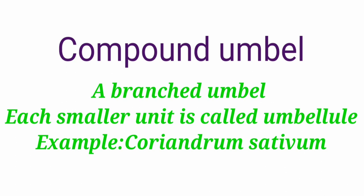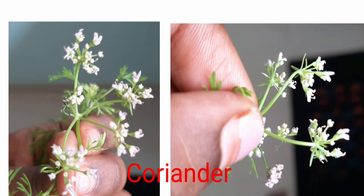Next one is the compound umbel, which is also called a branched umbel. Here the umbels are joined together on a common rachis, that is a primary rachis, and each smaller unit of the umbel is called an umbelet. The example for this is Coriandrum sativum, that is coriander. In this picture you could find the lower side and upper side of the coriander flower. You could find the rachis which has a common point from which the umbel arises, and from the common point of the peduncle the pedicels start to bear the flowers or buds.